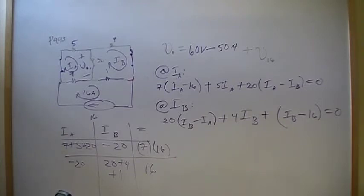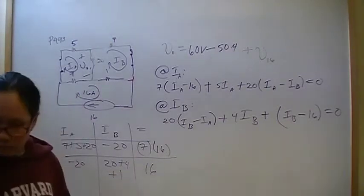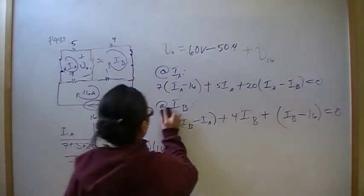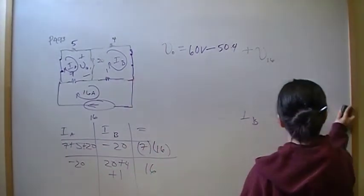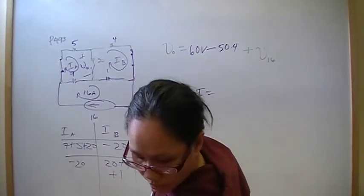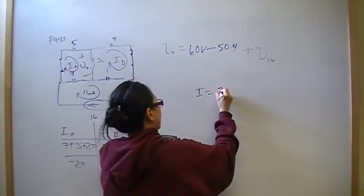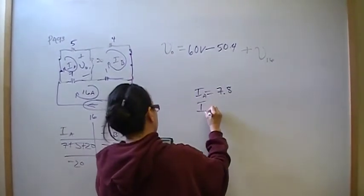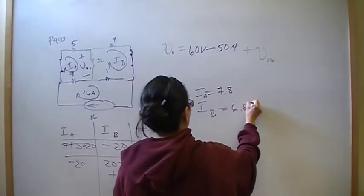We've got a 2 by 2 matrix. So, here's 7 plus 5 plus 20, negative 20, 7 times 16, negative 20. And then, 20 plus 4 plus 1, and 16, solve. So, what I got, what you should have gotten from that, is that Ia is 7.8, and Ib is 6.88 amps.